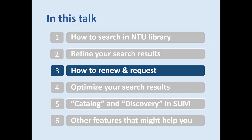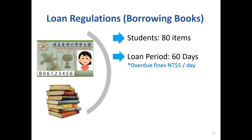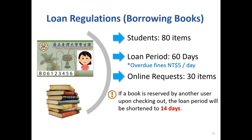In this part, I will introduce how to renew the books which you have borrowed, and also how to request books that are checked out by someone. Let's begin with the loan regulations. For students, you are allowed to borrow 80 items at the same time. The loan period is 60 days. If the loan period is up and no one has made a request, you are able to renew items online. If a book is already checked out by others, you can make an online request for up to 30 items. If a book is reserved by another user upon checking out, the loan period will be shortened to 14 days.